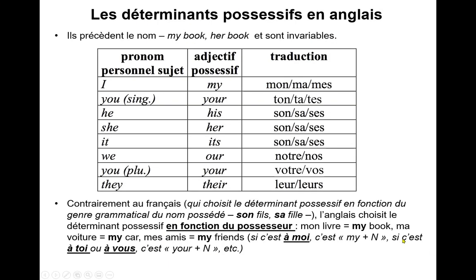Alors, les déterminants possessifs en anglais précèdent le nom, comme dans 'my book' ou 'her book', et sont invariables.